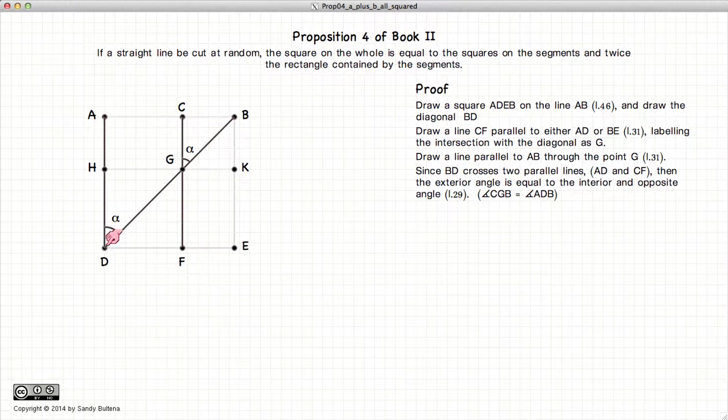Looking at the parallel lines, when another line crosses two parallel lines, the interior and exterior angles are equal according to Proposition 29. So this angle alpha equals this angle here.